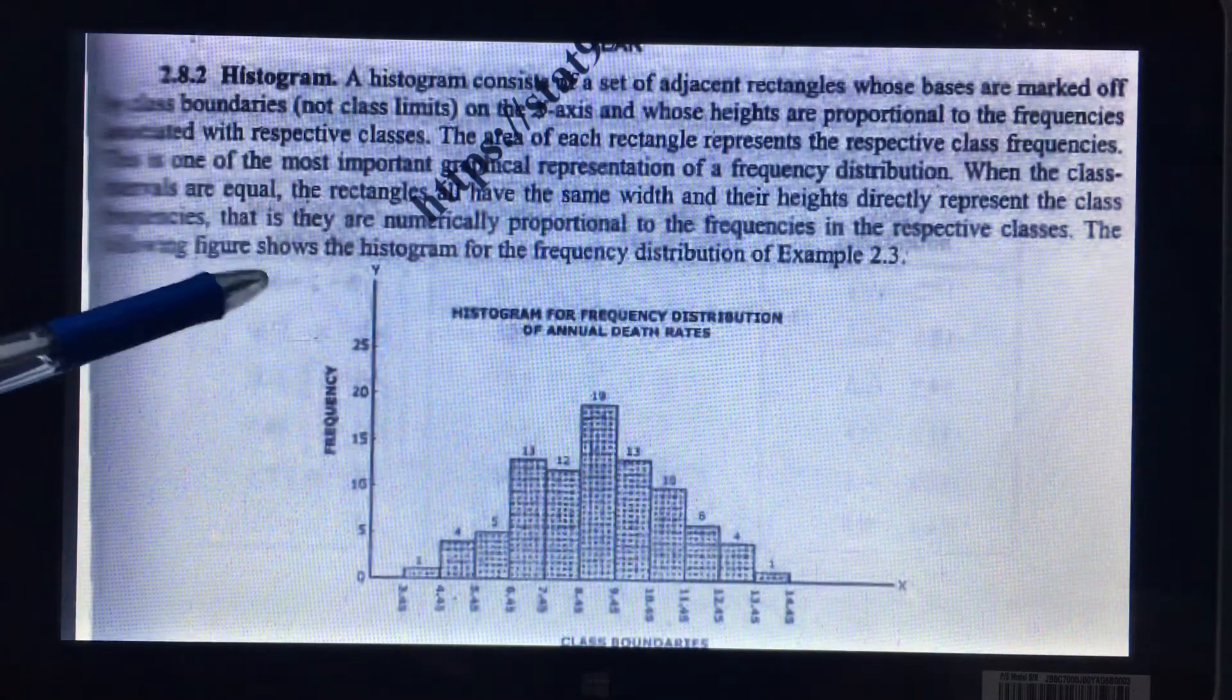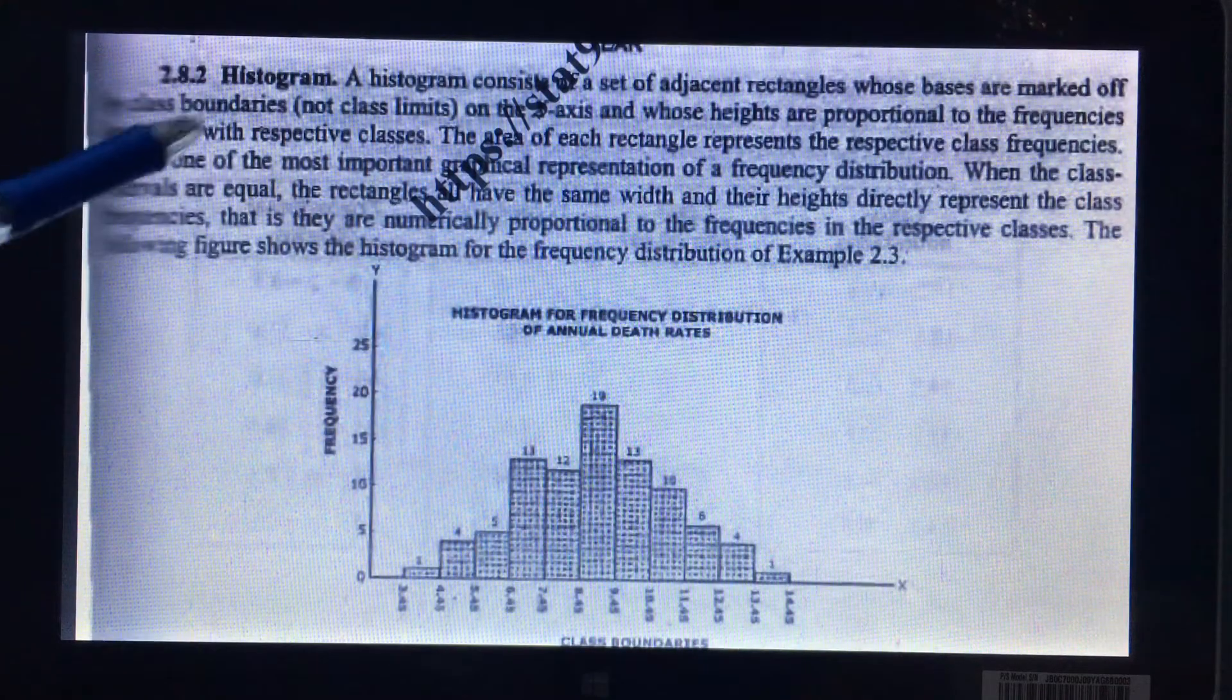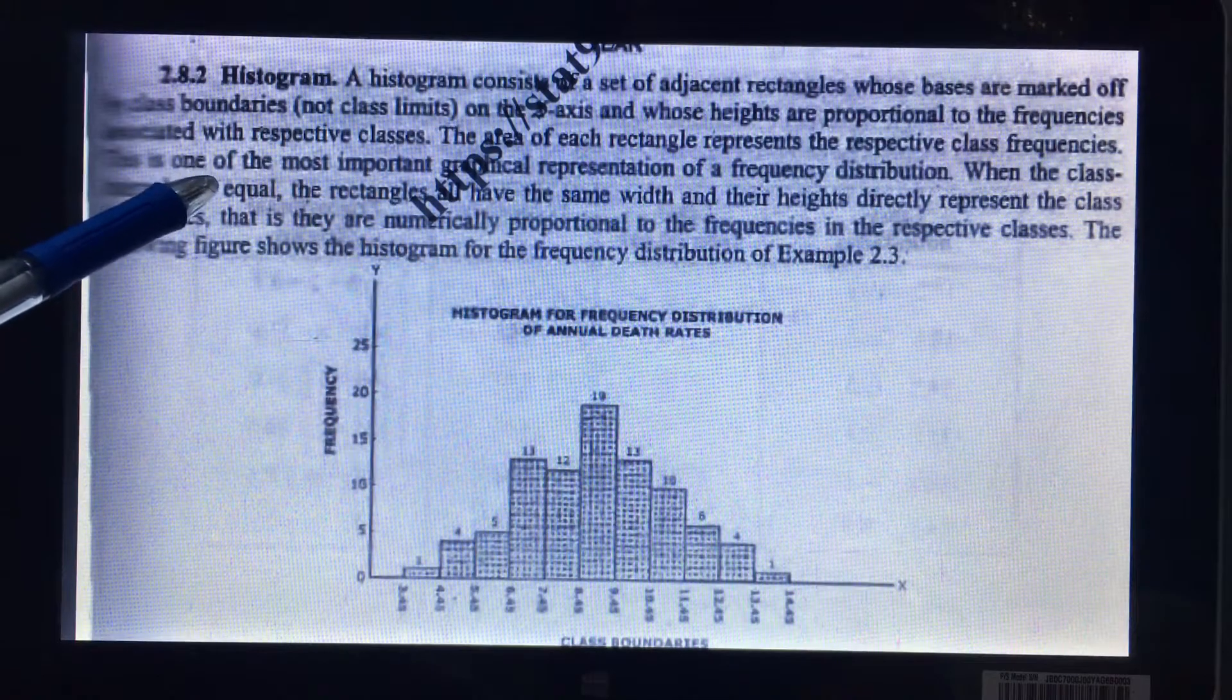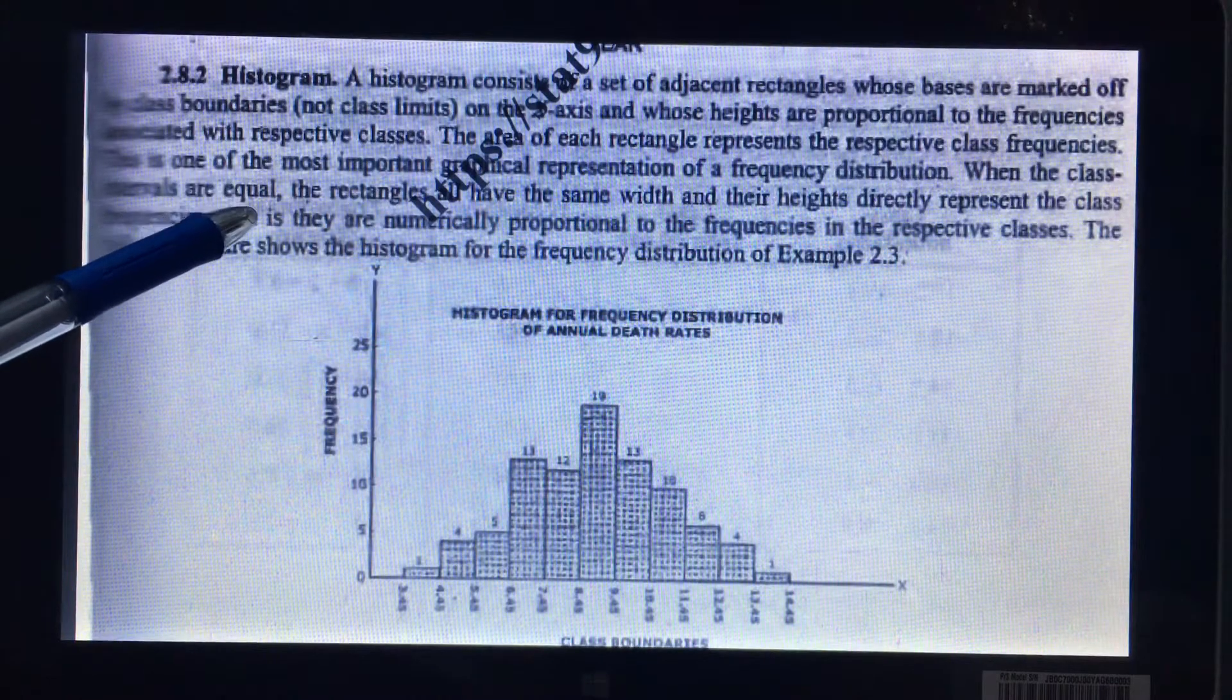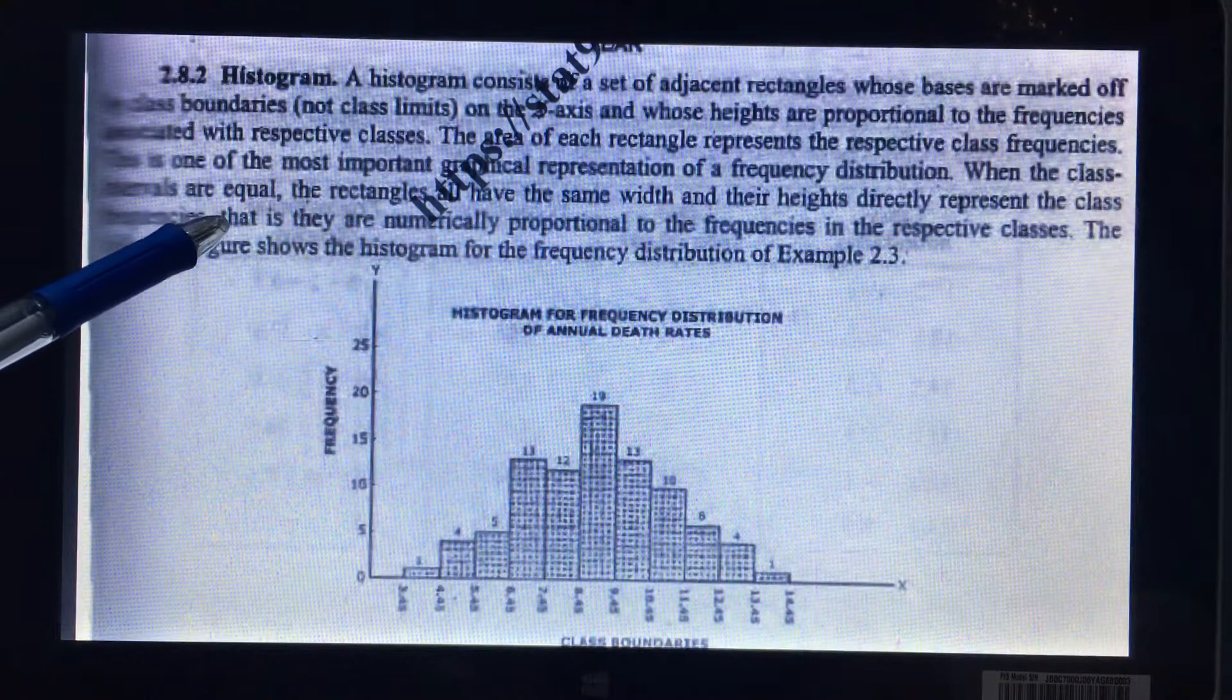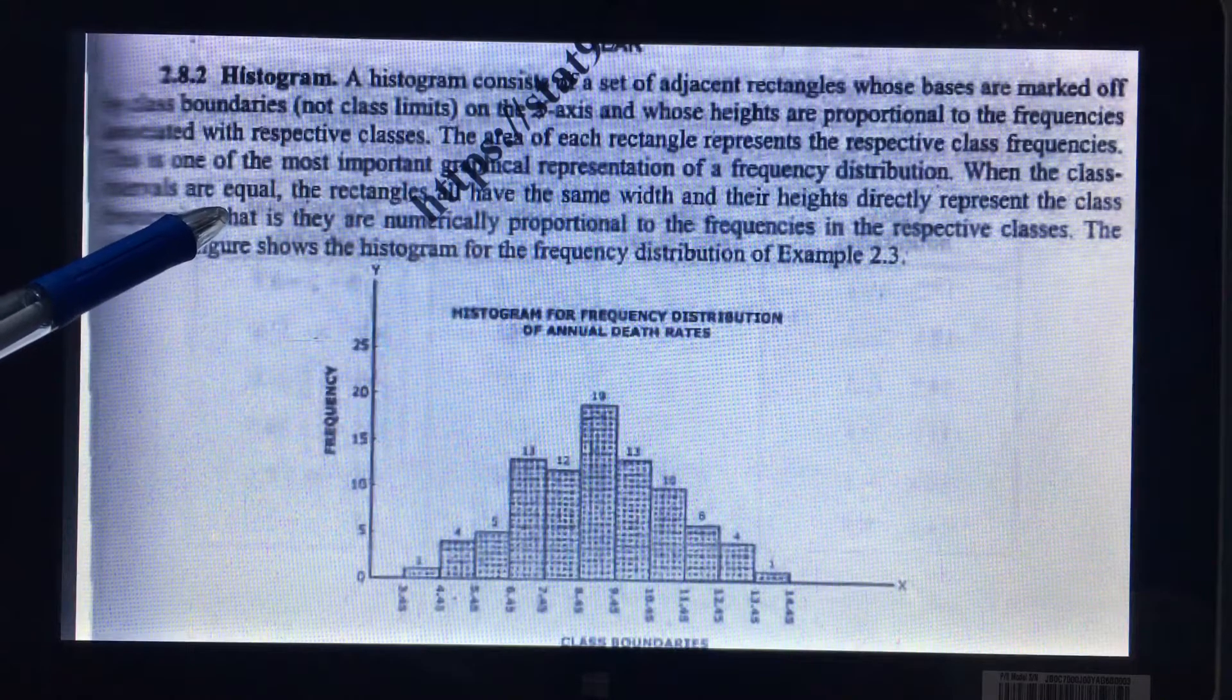First of all, I have the definition of the histogram. A histogram consists of a set of adjacent rectangles whose bases are marked off the class boundaries on the x-axis and whose heights are proportional to the frequencies associated with the respective classes.